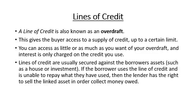Now we're looking at lines of credit, also known as an overdraft. This gives the buyer access to a certain amount of credit up to a set limit, and you can access as little or as much of that limit as you want. Interest is only charged on the money you actually use, not the whole credit limit. Lines of credit are usually secured against an asset the borrower owns, such as a house, boat, piece of land, or business.